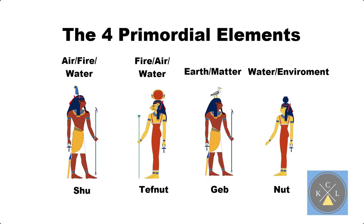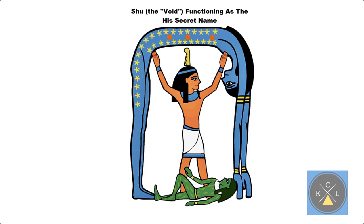Shu, in the function of his secret name, Rey, separates Nut and Geb from each other. You will see this depiction of Shu with arms raised, creating the void, separating Nut and Geb.